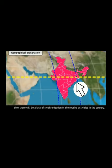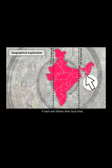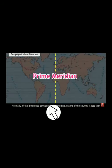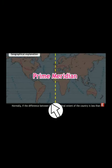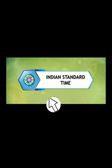India has only two longitude lines passing through it, so the difference is just over one hour — not a major problem. We therefore follow only one standard time zone called IST. If three or four longitude lines passed through India, we might need two time zones. The prime meridian is the starting point from which 12 hours on each side give the full 24-hour world time zone system.